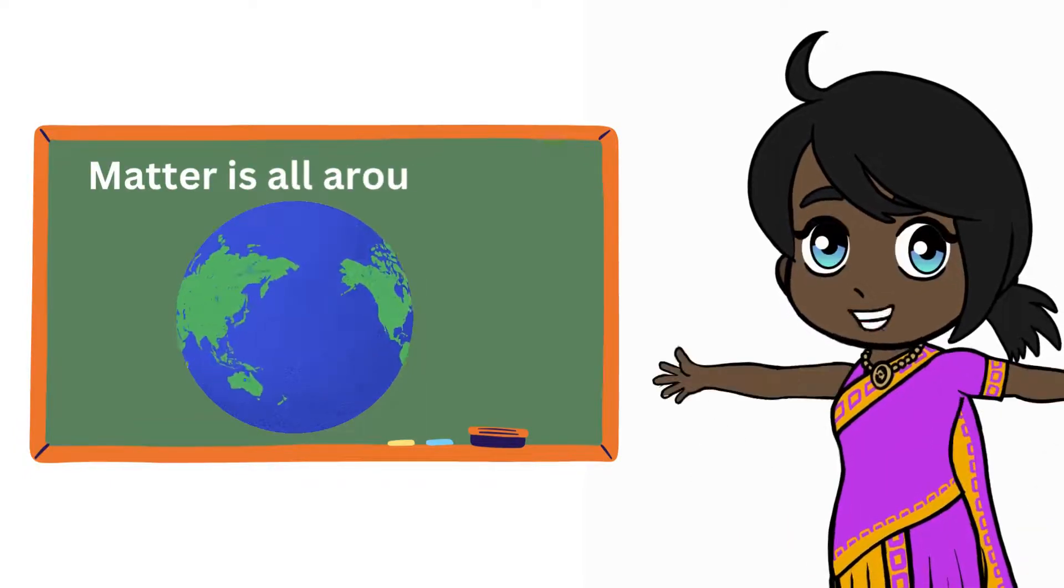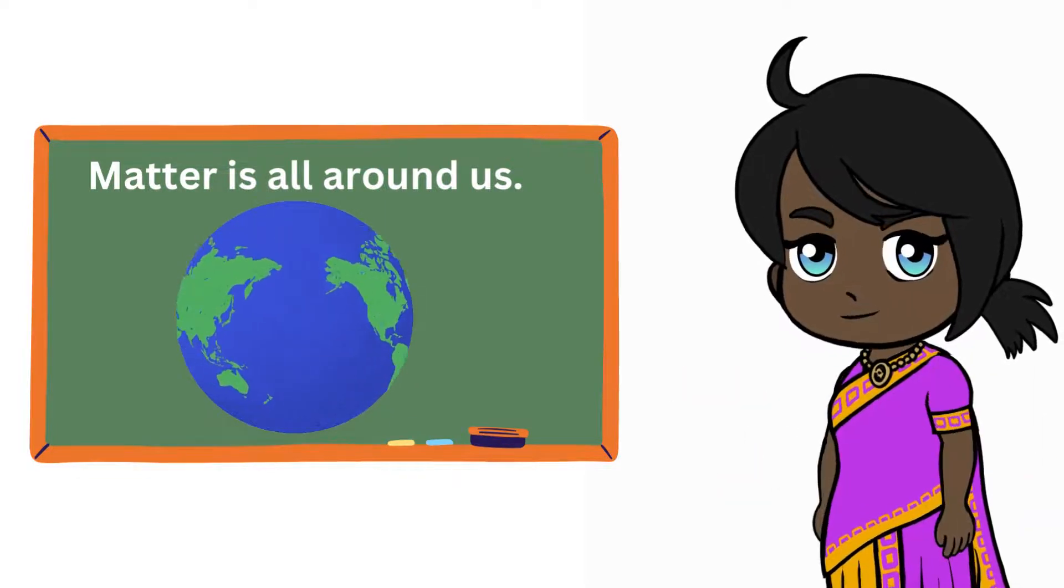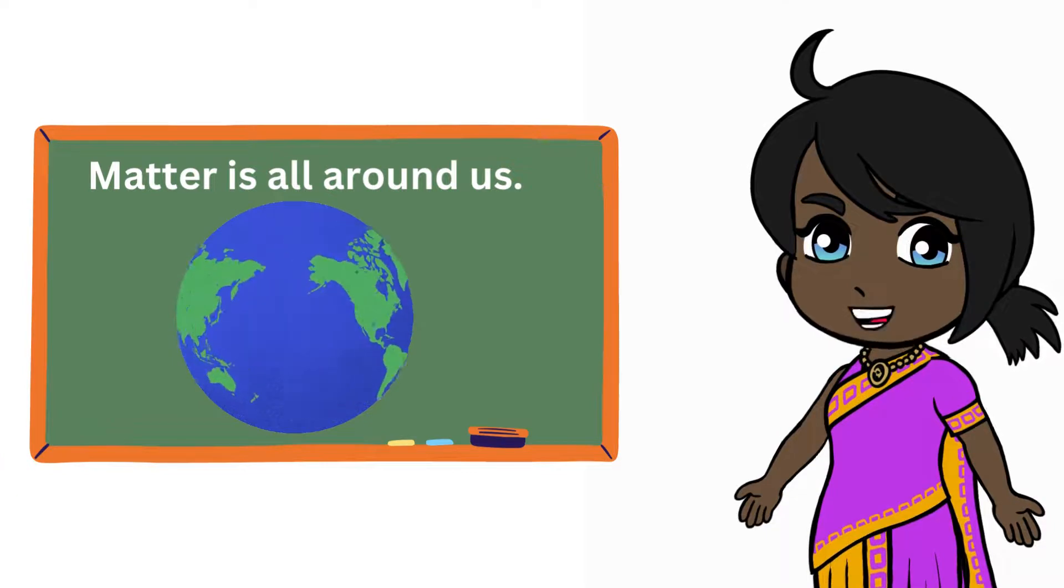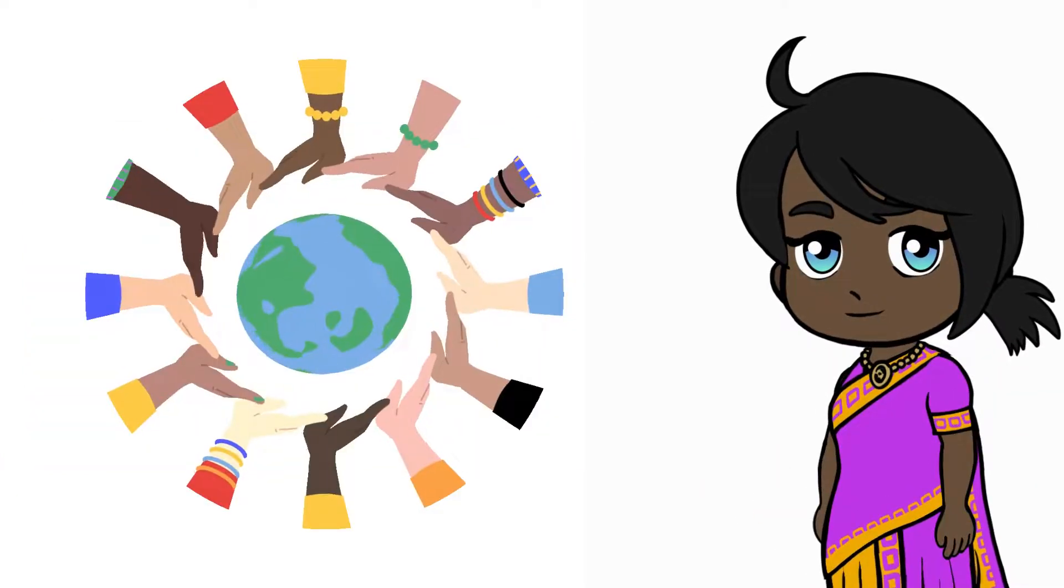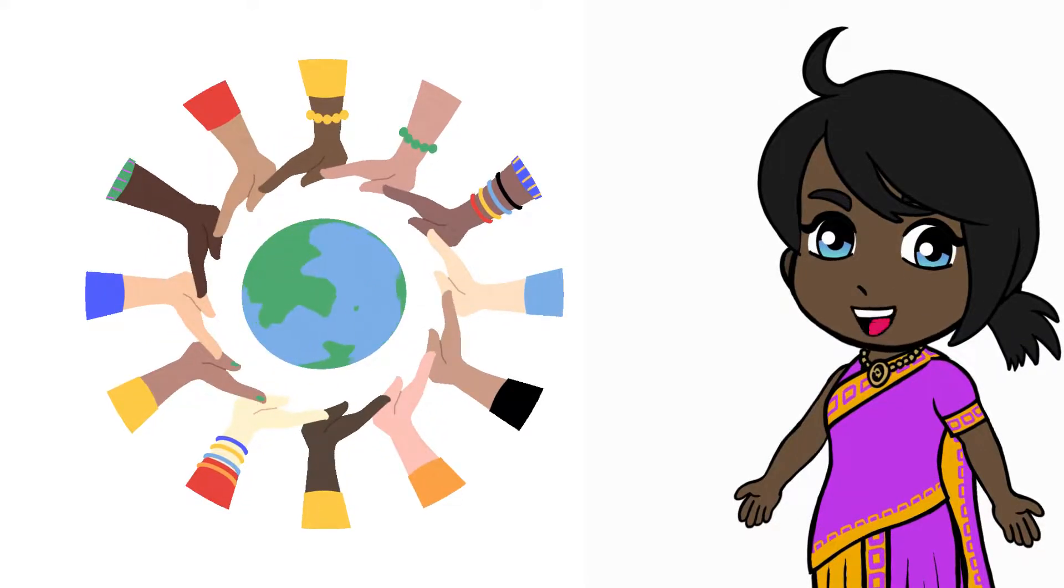In conclusion, matter is all around us, and it exists in different states. It can undergo physical and chemical changes, and it has properties that help us identify and describe it. Understanding matter is essential to understanding the world around us.